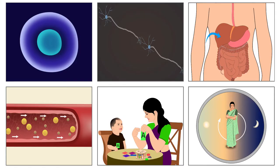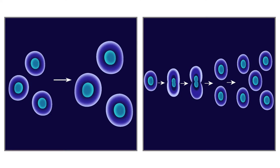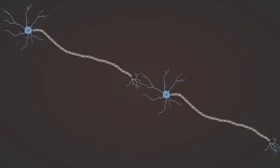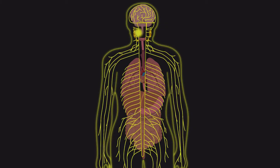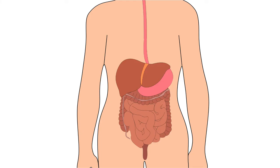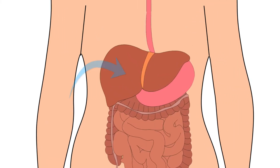Vital functions include maintaining the cell structure and functioning of cells. Choline helps in carrying nerve impulses from neuron to neuron, and also helps in carrying impulses from neurons to organs. Choline also plays a role in the normal functioning of the liver.